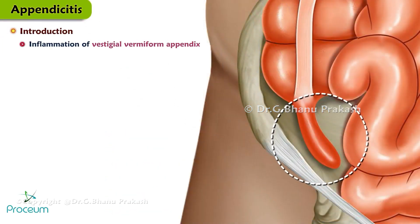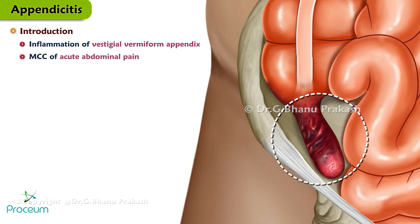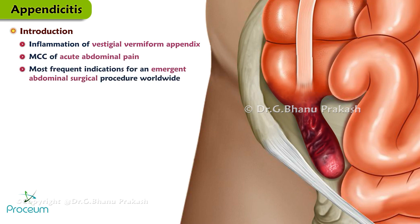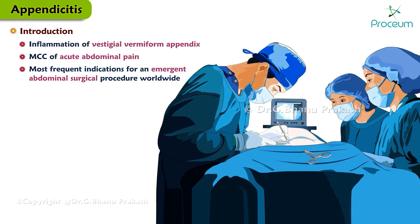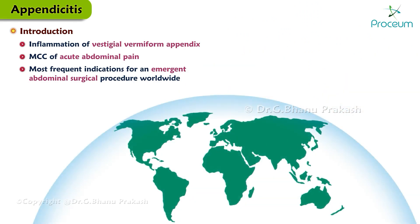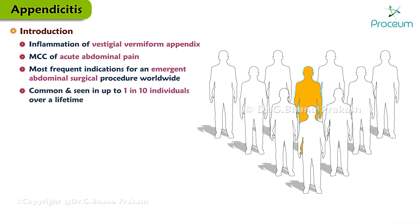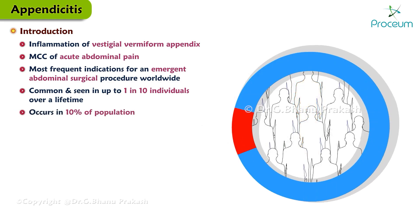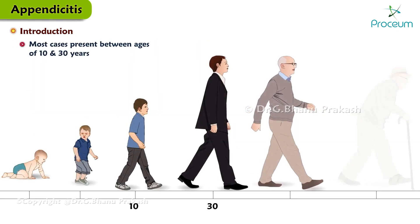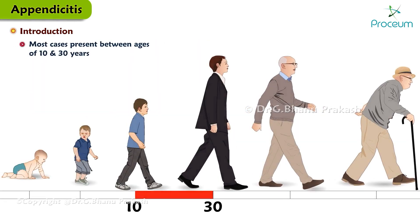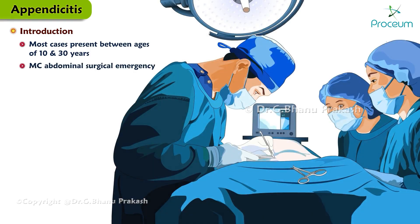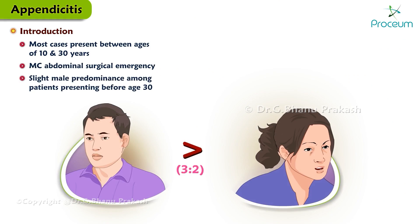Appendicitis is an inflammation of the vestigial vermiform appendix, which is one of the most common causes of acute abdominal pain and one of the most frequent indications for an emergent abdominal surgical procedure worldwide. It occurs in up to 1 in 10 individuals over a lifetime, or about 10% of the population. Most cases present between the ages of 10 and 30 years, and there is a slight male predominance with a male-to-female ratio of approximately 3 to 2.